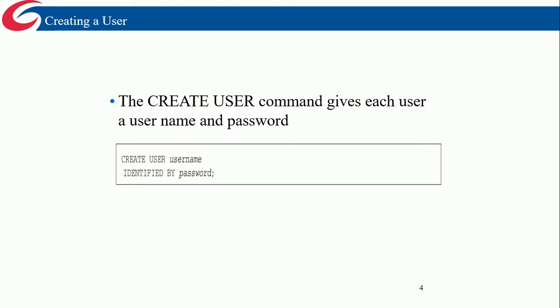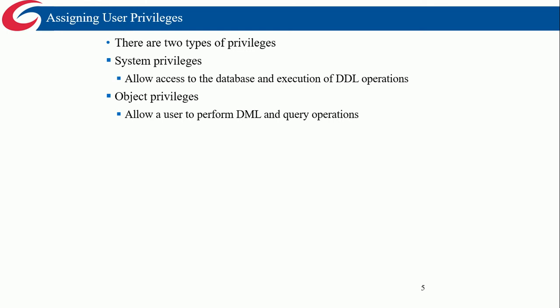When you're ready to create a user account in Oracle, the command is: CREATE USER then the username, IDENTIFIED BY, then the password. For example, if my username was B_green, it would be CREATE USER B_green IDENTIFIED BY 12345 — which would be the worst password ever, but theoretically you could create a user account with that.